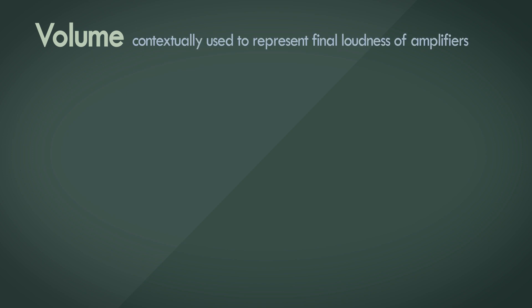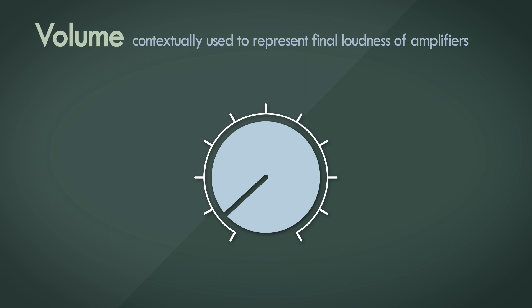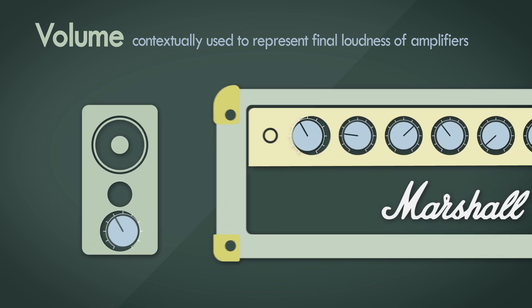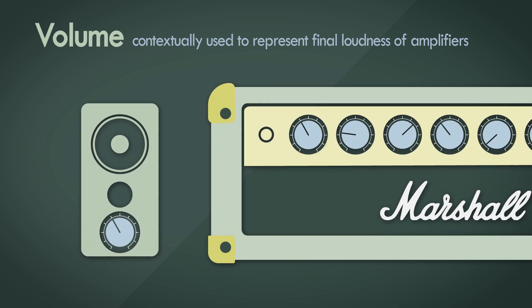Volume is quite similar to loudness, but the term is usually used contextually with the final loudness you can achieve from an amplifier, be it analog or digital. You would have come across volume controls on your radios, speakers, or guitar amplifiers with values ranging from 0 to 10. And you might ask: if you can associate volume with a number, does that not mean it's an objective measure? But what does a volume setting of 4 mean when comparing a tiny desk speaker to a 100-watt guitar amplifier? It doesn't translate to the same loudness — it's just a convenience measure for consumers.